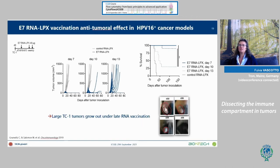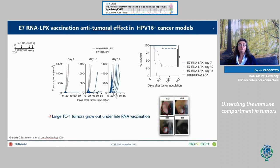Tumor growth can be seen up to day 22. If we inject the first RNA lipoplex encoding E7 at day 7, 10, or 13, we see different effects: day 7 completely prevents tumor growth, day 10 strongly decreases it, and day 13 allows tumors to grow and then be rejected after the third vaccination — though tumors relapse when vaccination stops. The survival data confirms that the earlier you start treatment, the better the survival benefit.